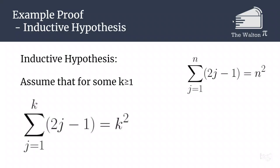The next thing is we need to have our inductive hypothesis. So we will assume that for some k greater than or equal to 1, the sum from j equals 1 to k of 2j minus 1 is equal to k squared.